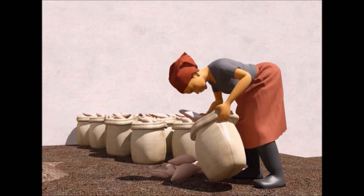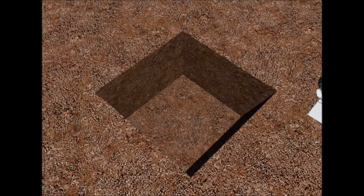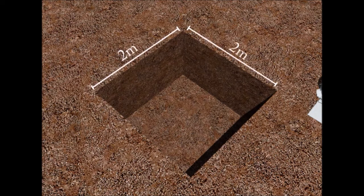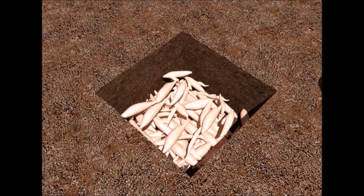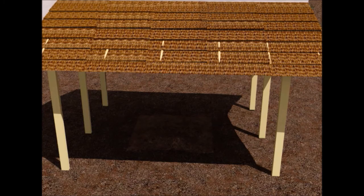We can store cassava in sacks for one to two weeks. We cover the sacks with a plastic sheet or tarpaulin and keep this in the open. If we want to store it for up to three weeks, we dig a hole of two meters by two meters and one meter deep. We put the cassava in the hole, cover it with soil and make a shed over the pit.